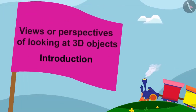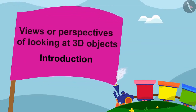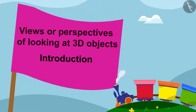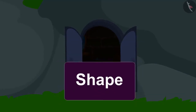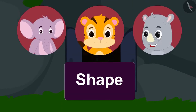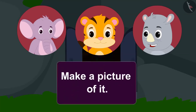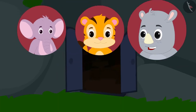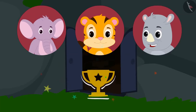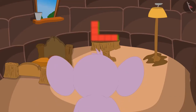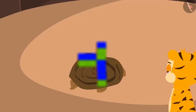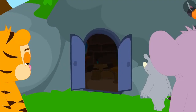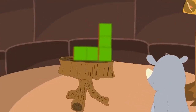In this video, we will learn about the views or perspectives of looking at three-dimensional objects. Appu, Sher Khan, Gaggu and Golu are playing a game. Golu has made a shape out of boxes in another room. Appu, Sher Khan and Gaggu will look at that shape by turns and come back and make a picture of it. The person whose picture most resembles Golu's shape will win. All three went and drew their pictures.